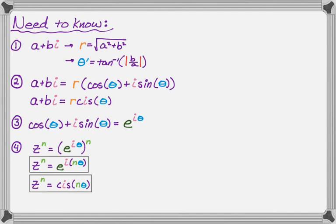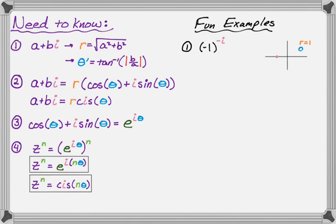So there are two kind of fun examples that I like to do with this. The first one is to look at negative one to the negative i. The first thing I'm going to do is figure out what's going on with negative one. So I'm going to draw it. Negative one is just right there on the real axis. So I know it's one unit away from the origin, so r is one. And then it's on the negative x axis, which is just theta equals pi.